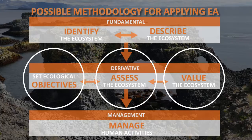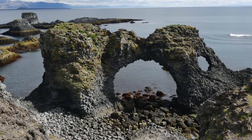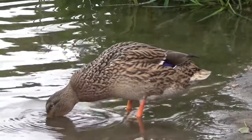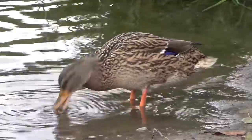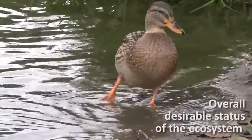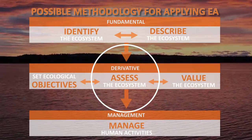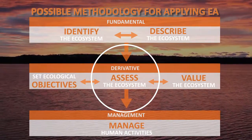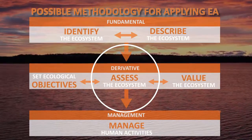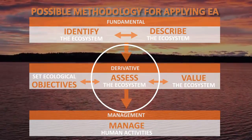Derivative of these fundamental aspects are three elements. Setting ecological objectives for ecosystem components, such as species and habitats, and for the overall state of the ecosystem includes a description of sustainability, such as the overall desirable status of the ecosystem. Assessing the ecosystem is done by gathering observations on the status and trends of all relevant ecosystem components in an integrated assessment.